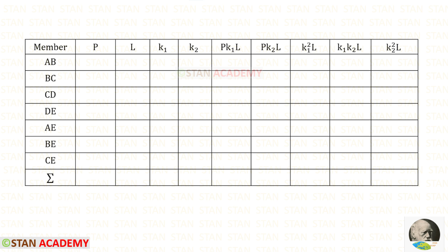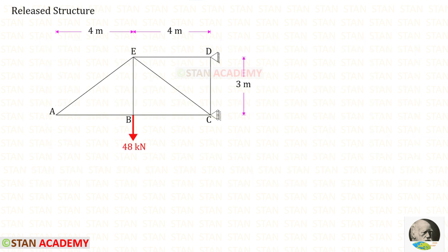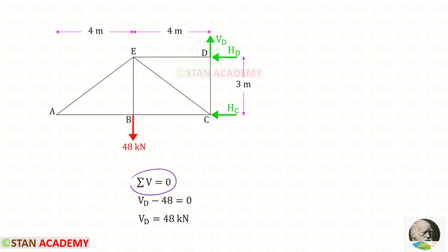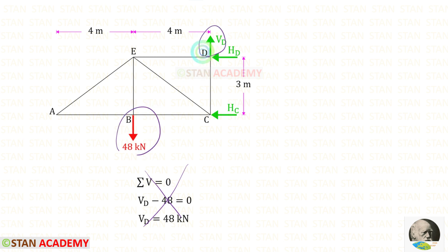We make a table entering all members and finding the values of P — the member forces in the released structure. At point D there is a hinged support with two reactions, and at point C the roller support has only one horizontal reaction. Using the vertical equilibrium rule, VD will be 48 kN acting upwards. Since there is no other vertical load or vertical reaction, VD must equal 48 kN.